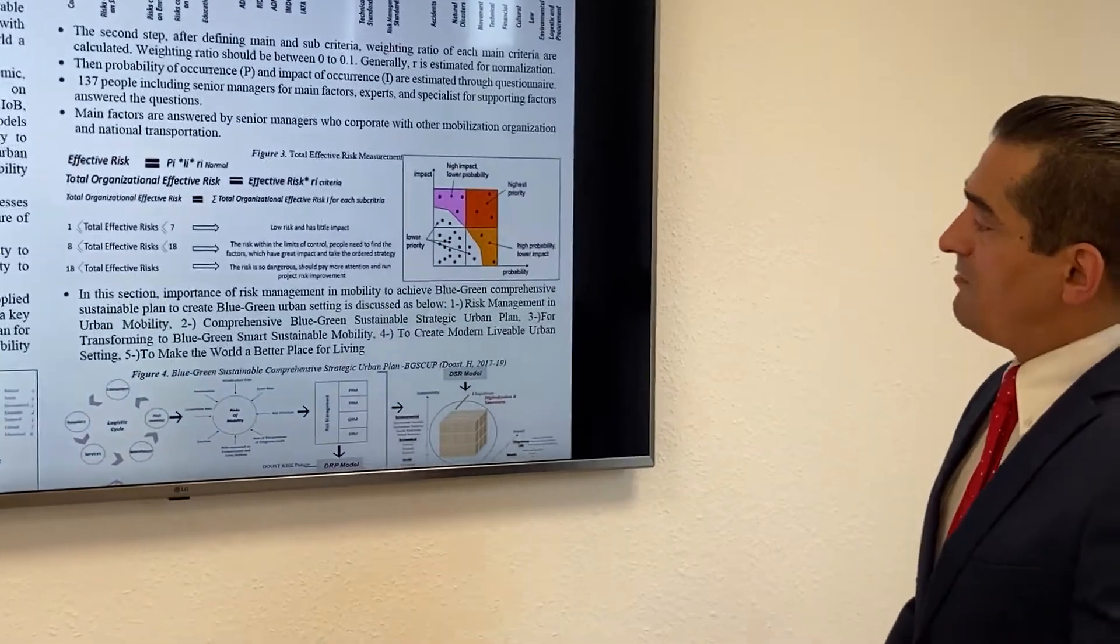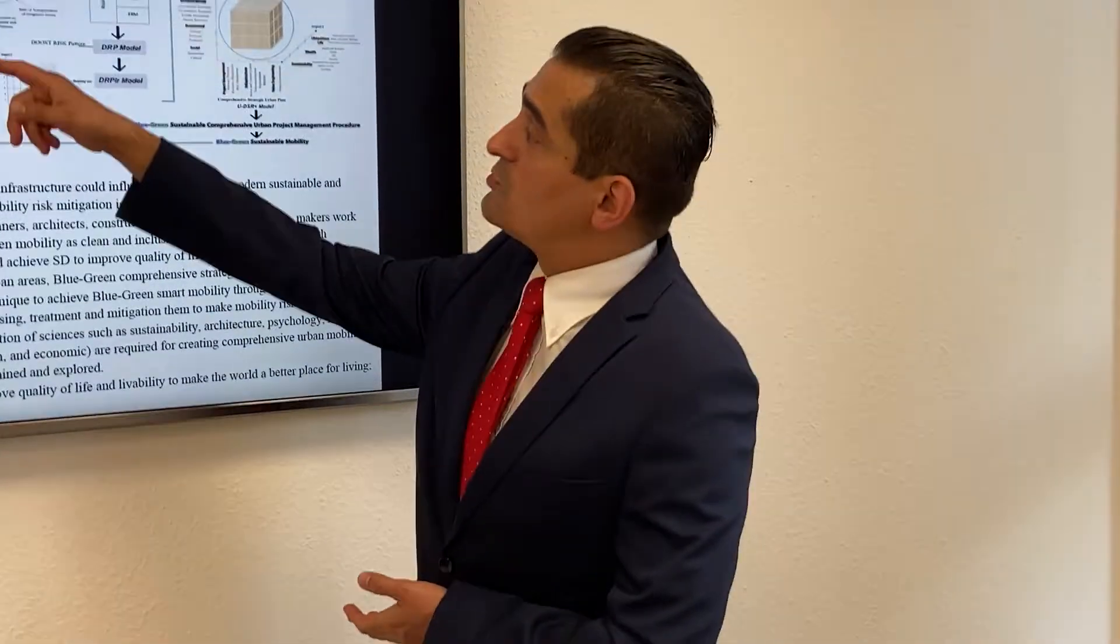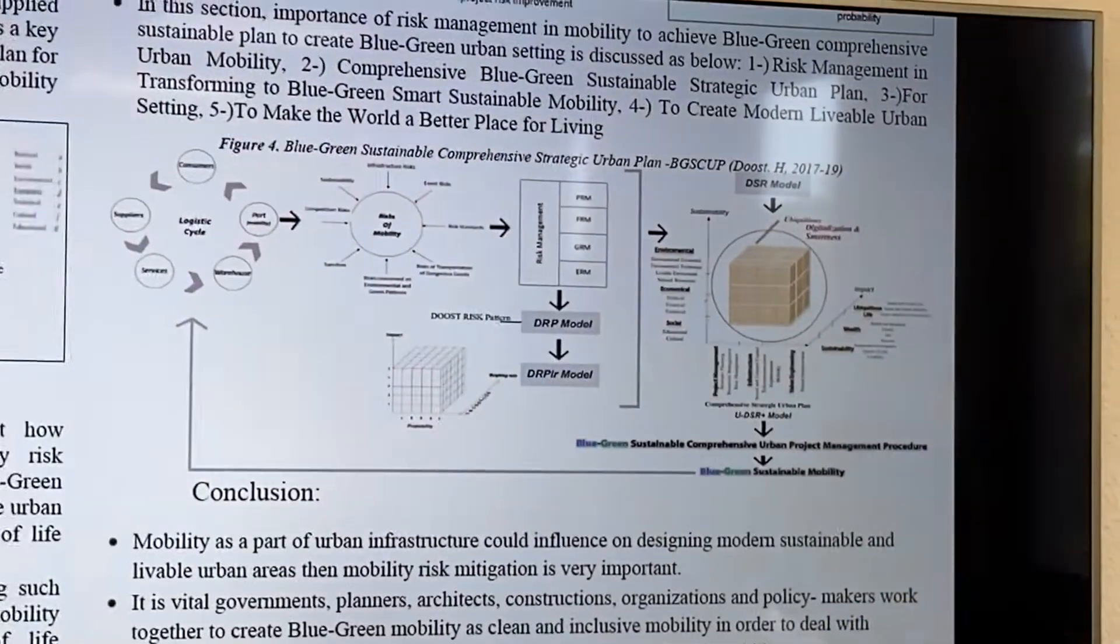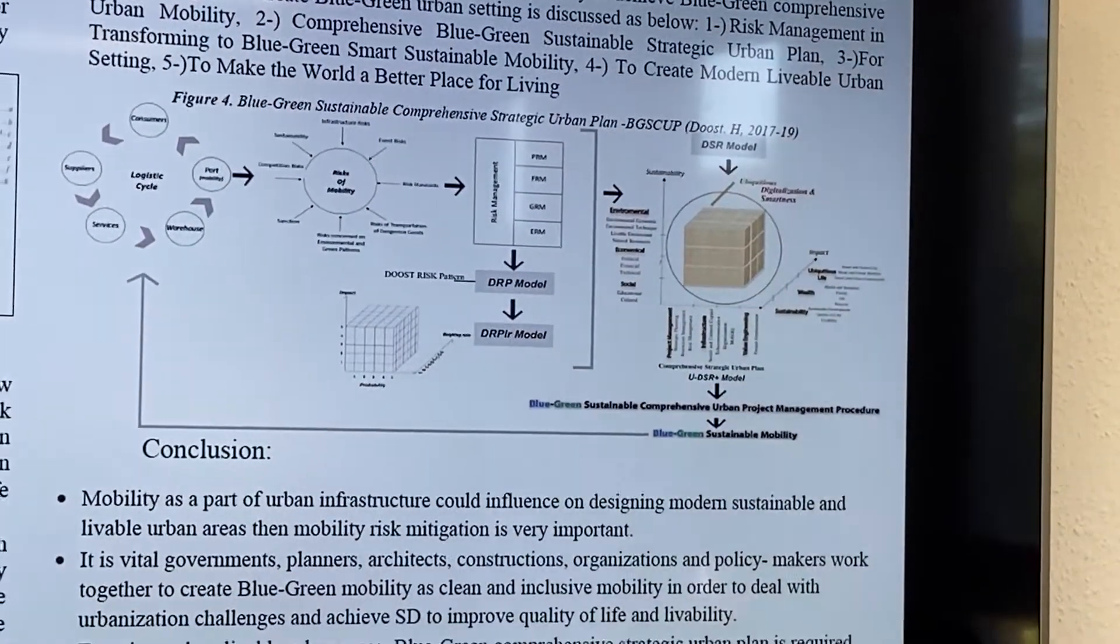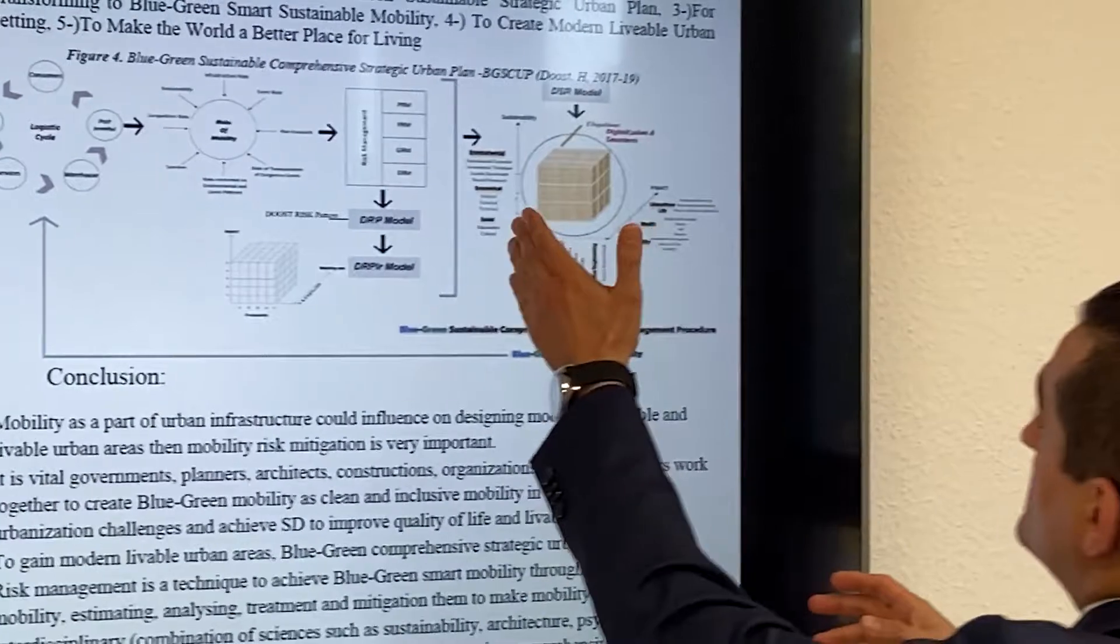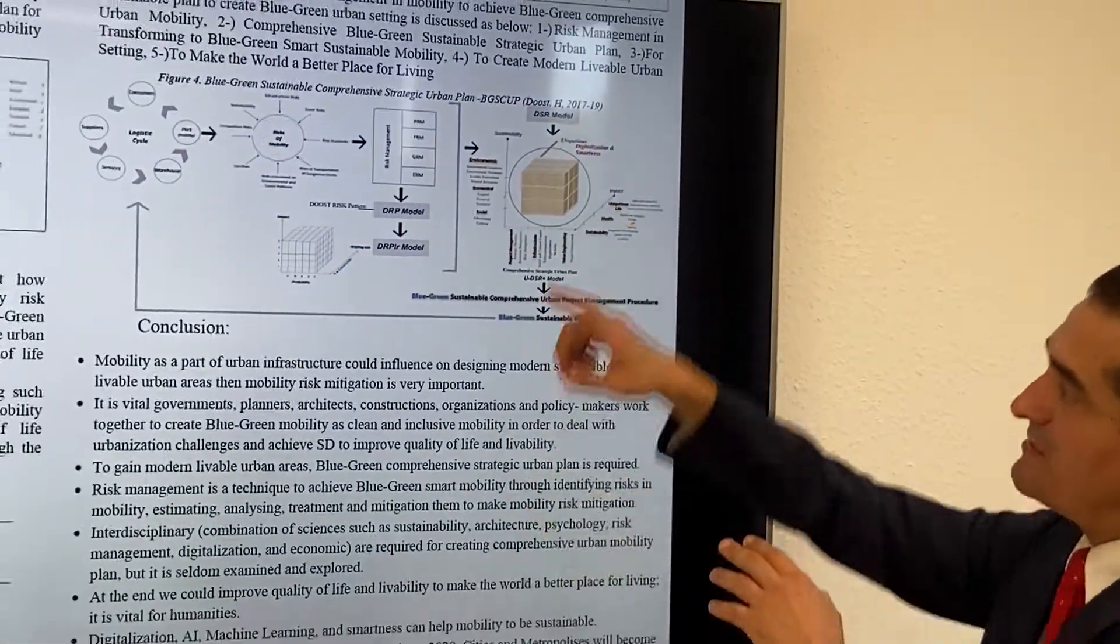I'm going to show you one blue-green sustainable comprehensive strategy plan. We have the logistics cycle, risks for mobility including project risk, financial risk, government risk, and enterprise risks. We have a DSR model with sustainability index, comprehensive plan index, and impact. Then we have the cycle.